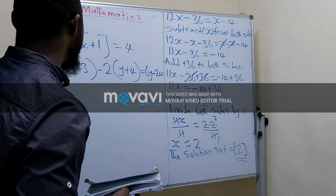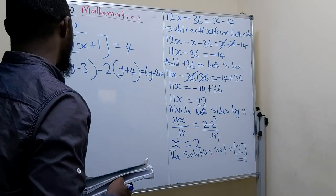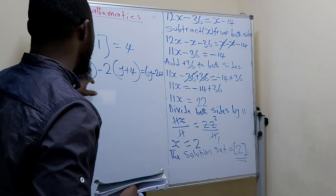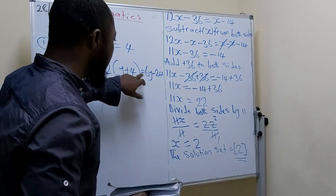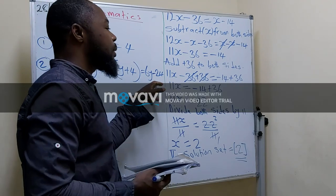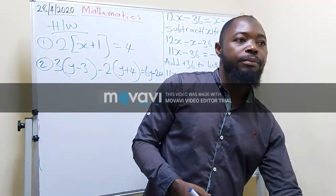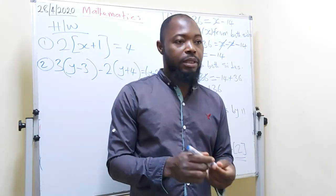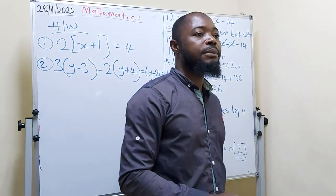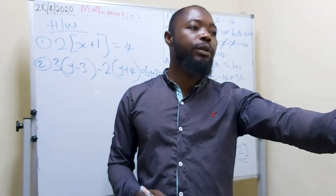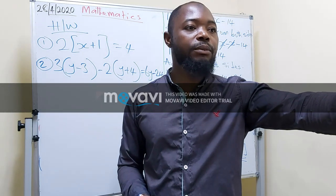The first homework question is: 2 open bracket, x plus 1, close bracket, equals 4. The second question is: 3 open bracket, y minus 3, close bracket, minus 2 open bracket, y plus 4, close bracket, equals 6y minus 24. Try to solve these at home, and next lesson, anyone who got it right shows their answers.